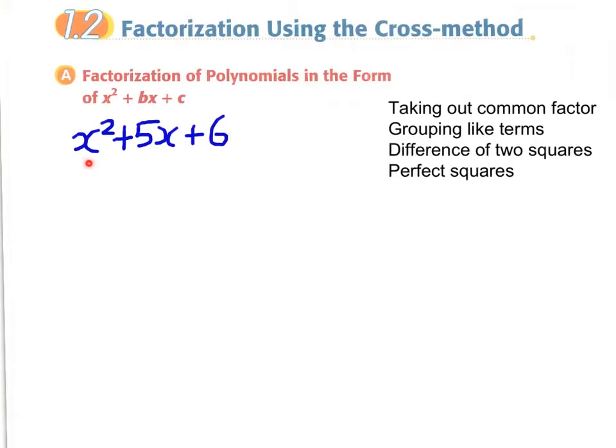Note that this expression is none of the four factorization techniques we have learned before. We cannot find a common factor here, there are no like terms, and it is not a difference of two squares nor a perfect square format. So we need a new method to factorize this expression.